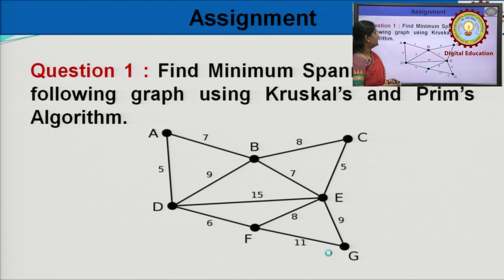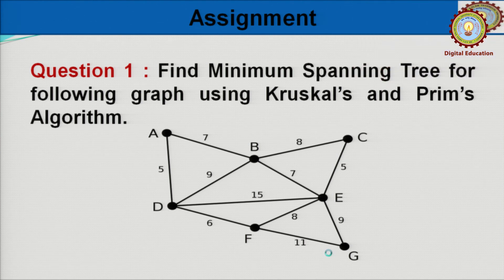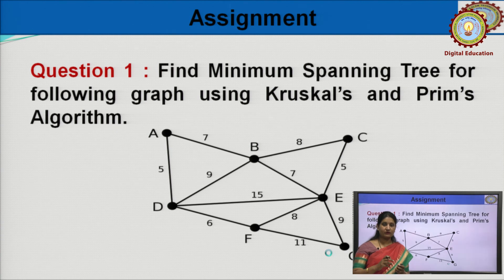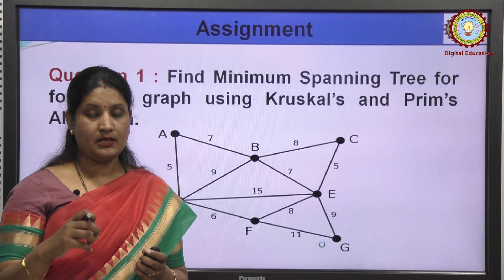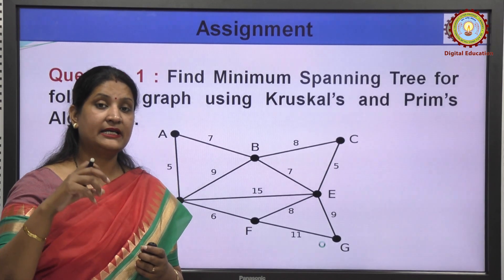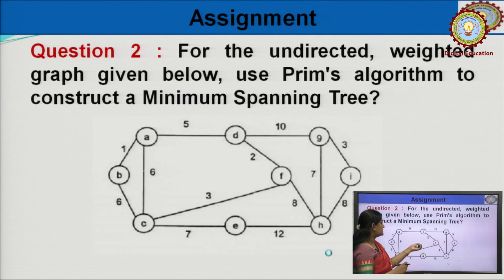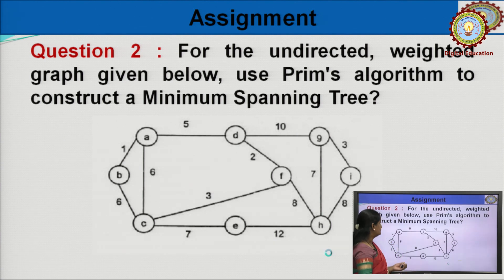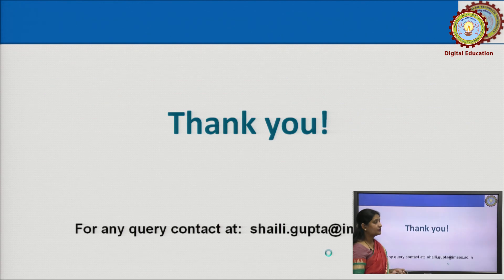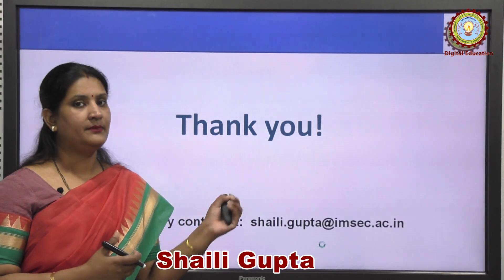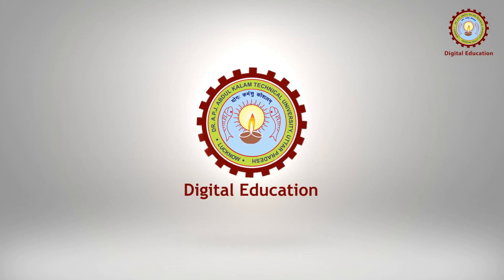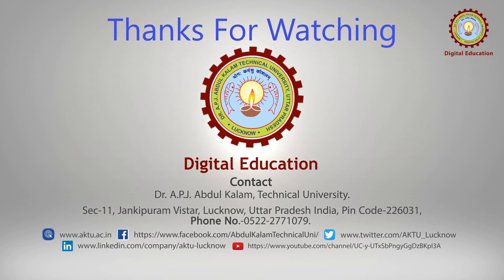This is the assignment for you — find out the minimum spanning tree of the given graph using Prim's and Kruskal's algorithms. Always remember: in Kruskal's, we always take the minimum cost edge; in Prim's, we always take the connected minimum cost edge. For this undirected weighted graph, find out the minimum spanning tree using Prim's algorithm. These are the references. Thank you so much — for any query you can contact at this email ID. Thank you.